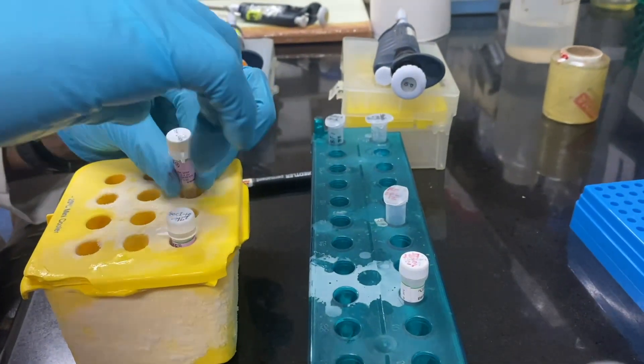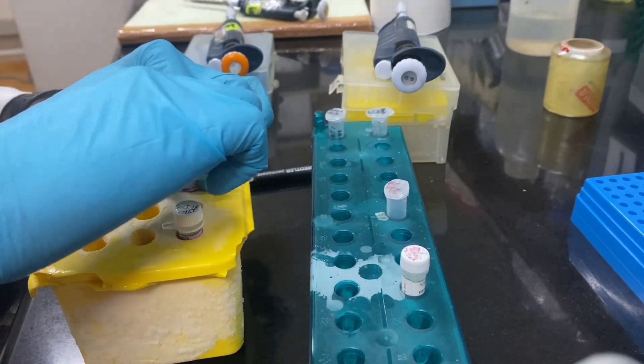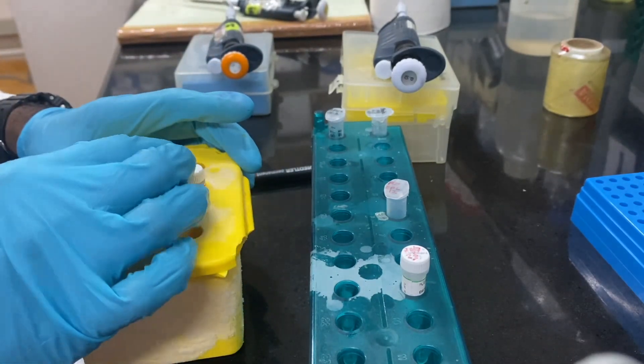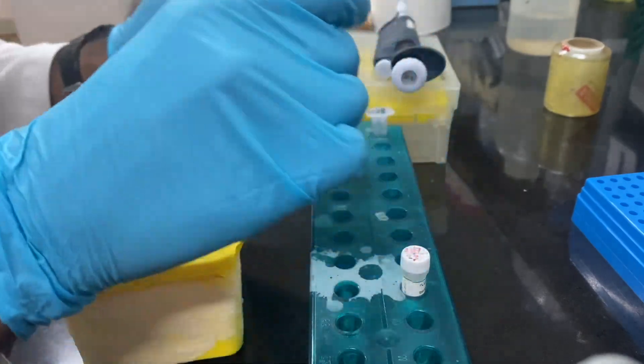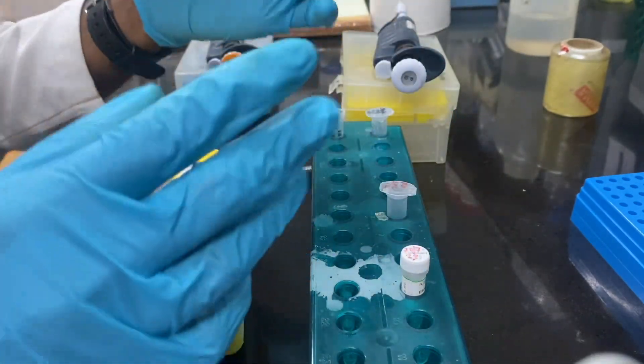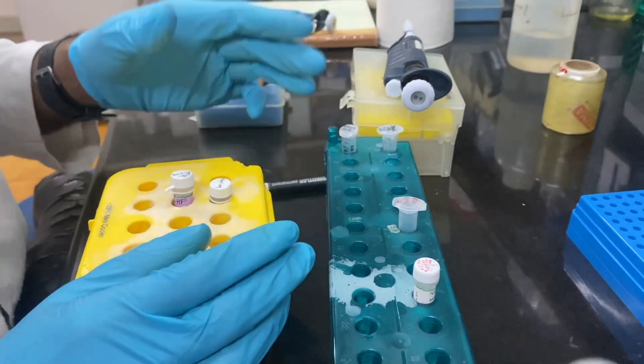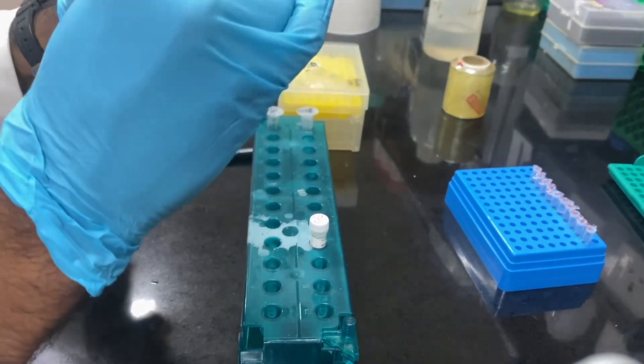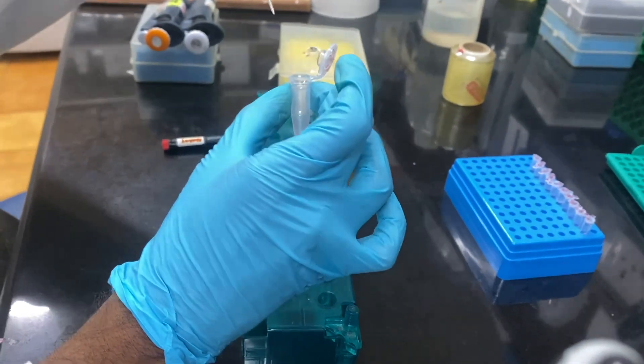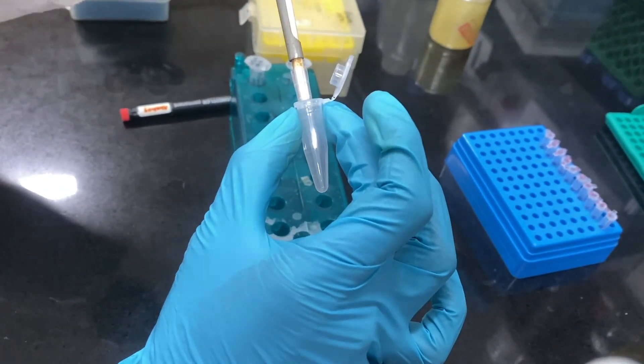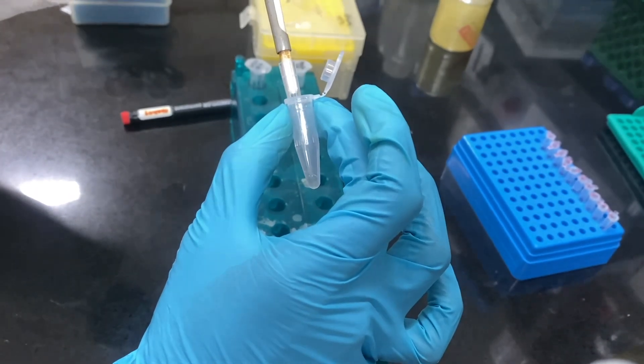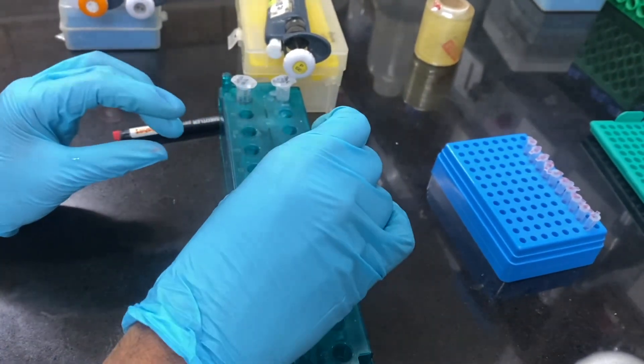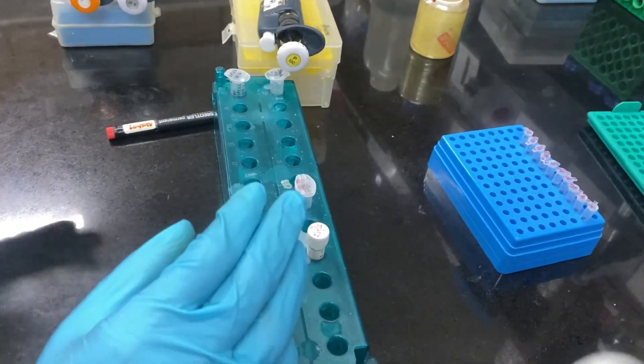Now both enzymes have been added. We will mix it with the pipette first and then we will give a short spin to this reaction tube and we will keep it at 37 degrees Celsius for one hour. After adding each component we have to gently mix with the pipette and we can give a short spin also to the tube and we can keep it at 37 degrees Celsius.